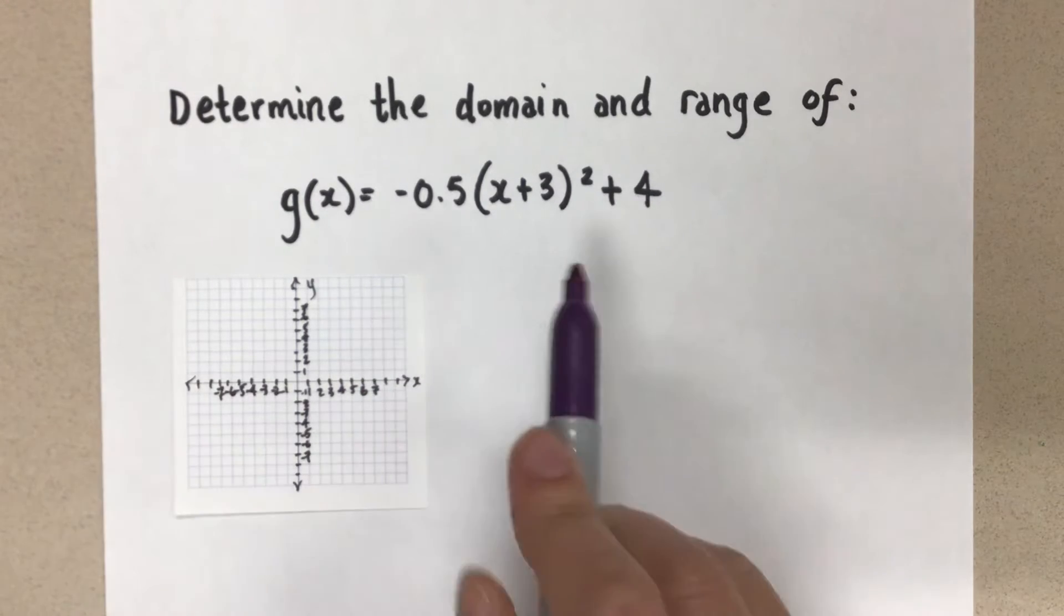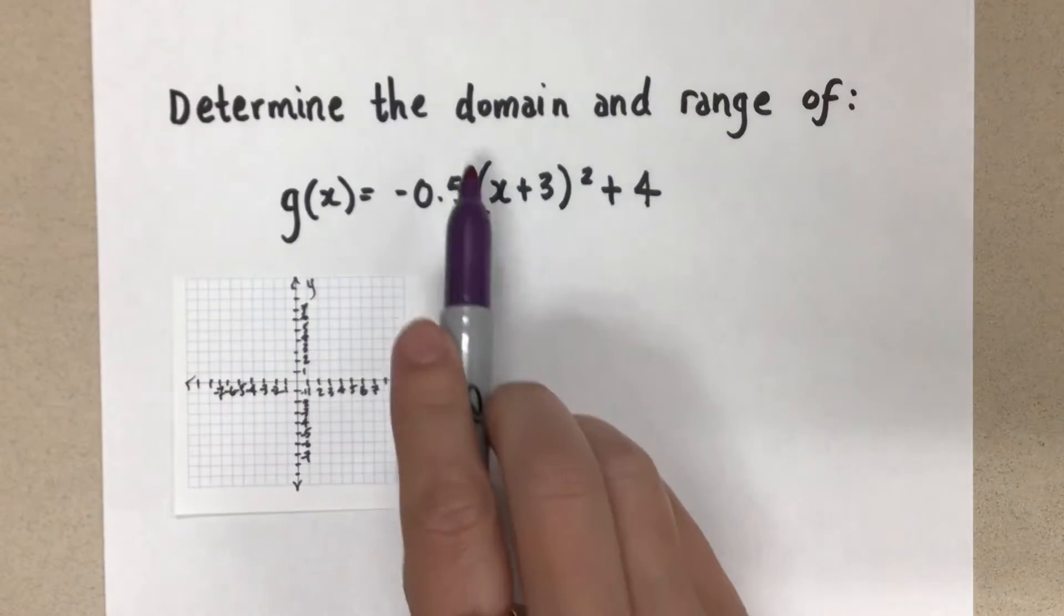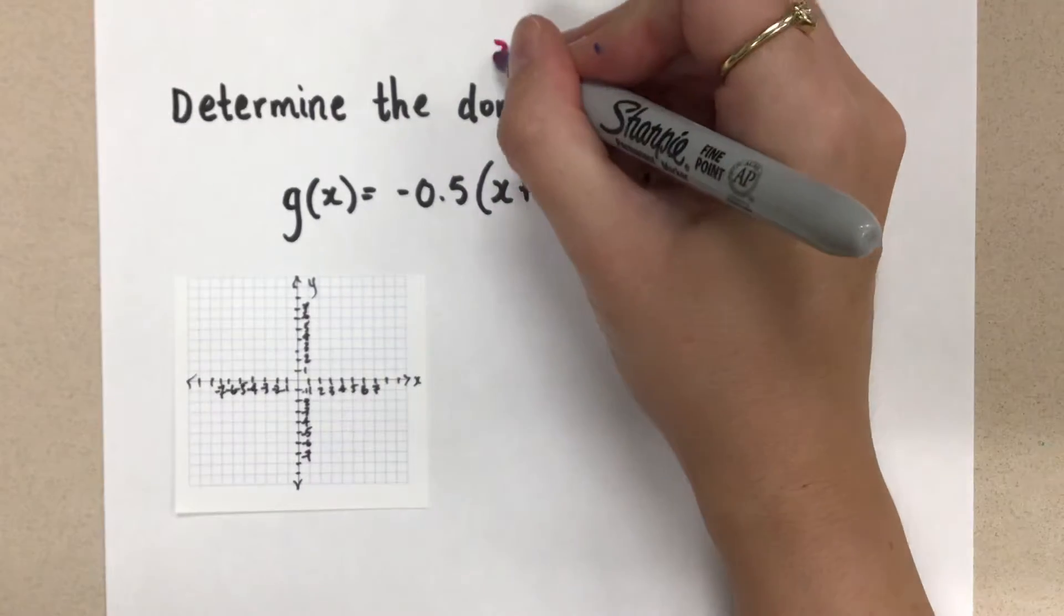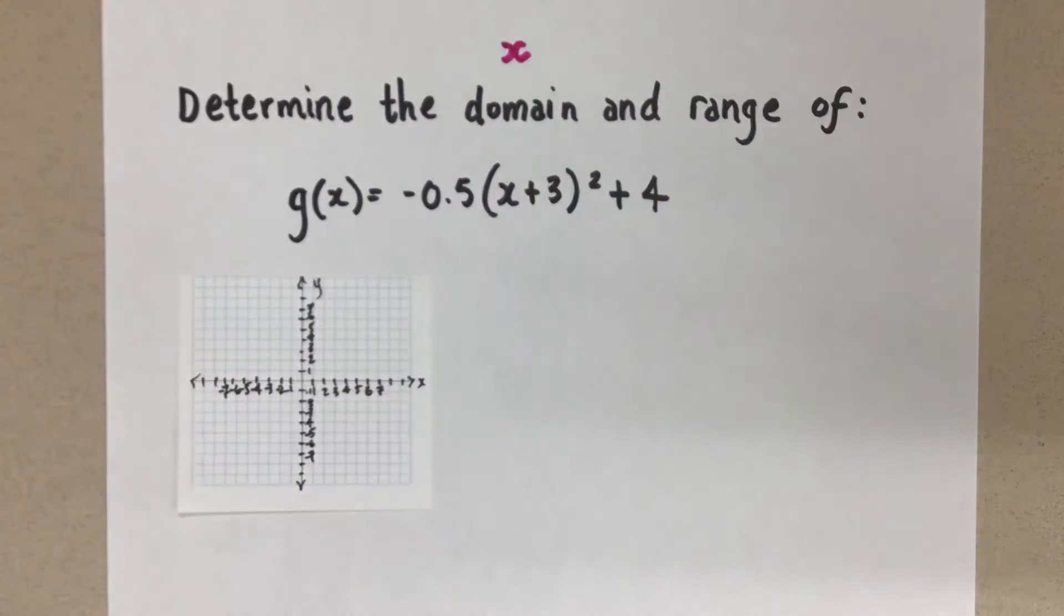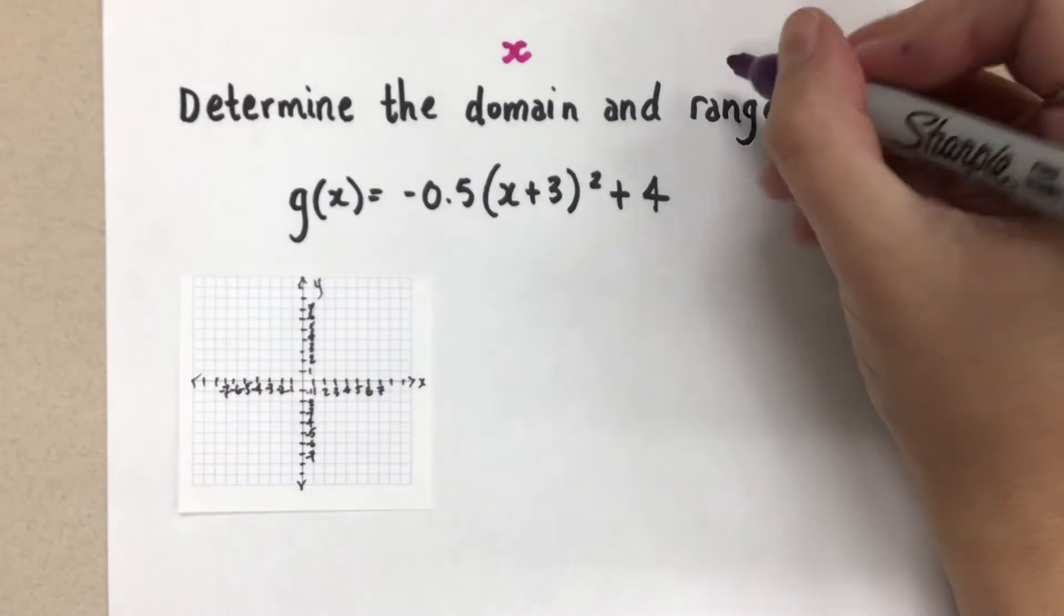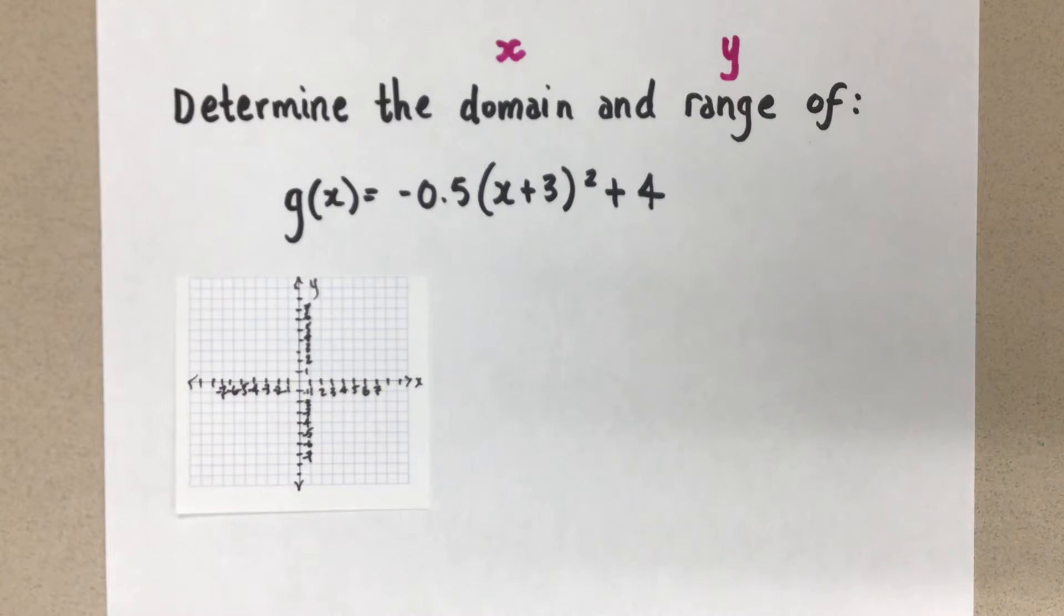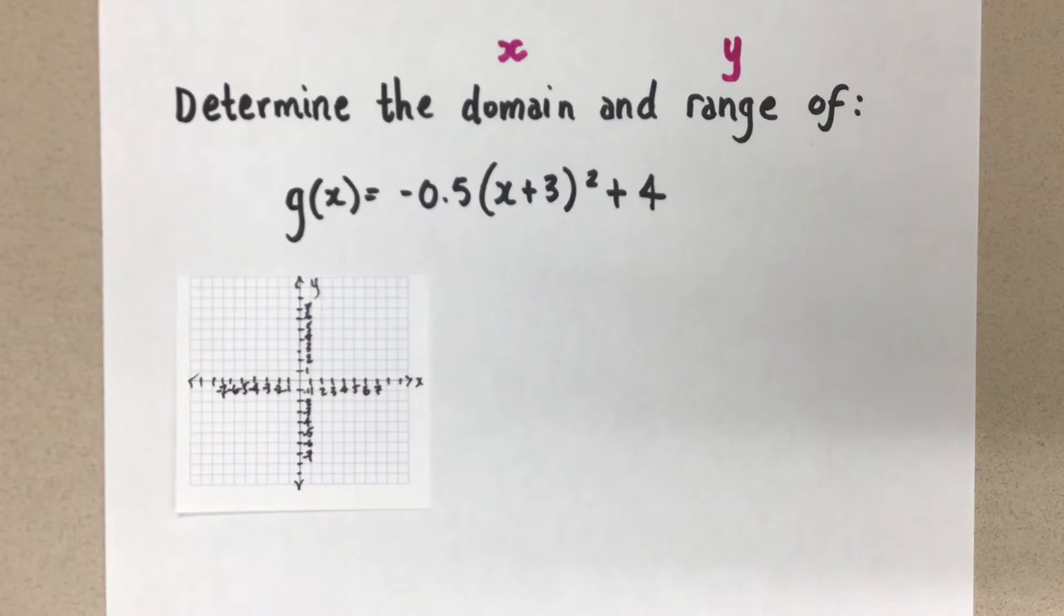And let's remind ourselves what domain and range means. The domain of a function is all of the x values that the function can take on. That means all of the x's it's going to go through when you think of the number line. And the range means all of the y values that the function is going to take on, which means thinking of the vertical number line, which values is the function going to go through.